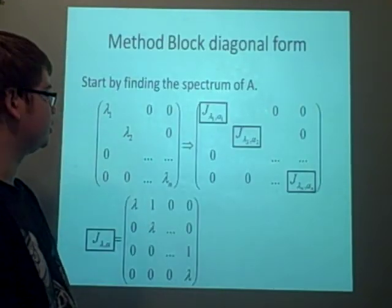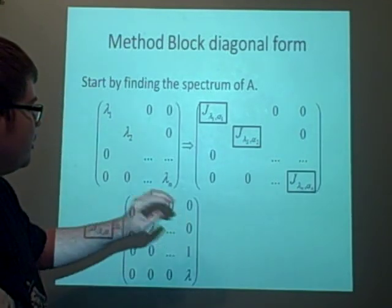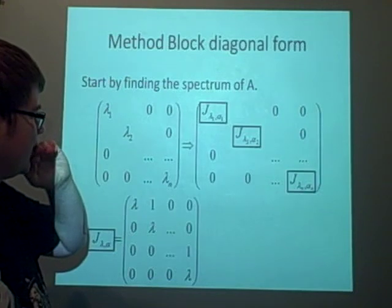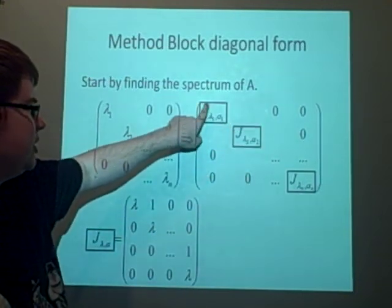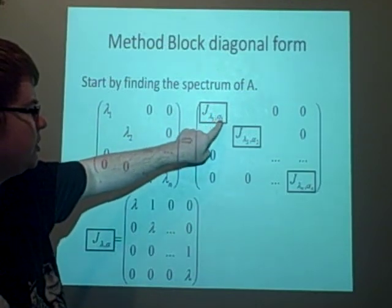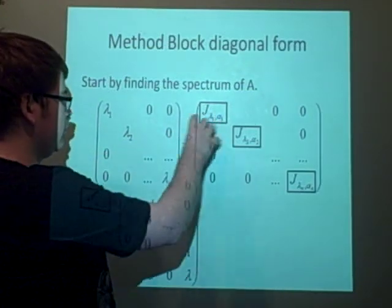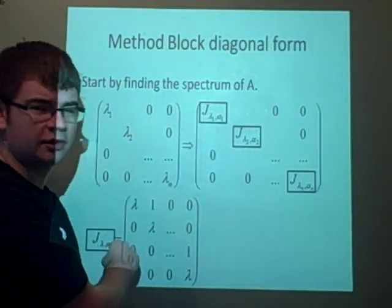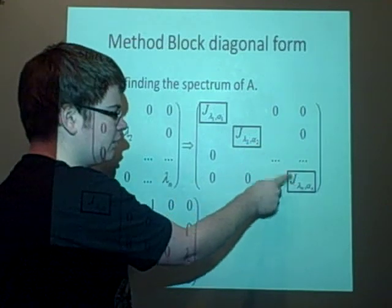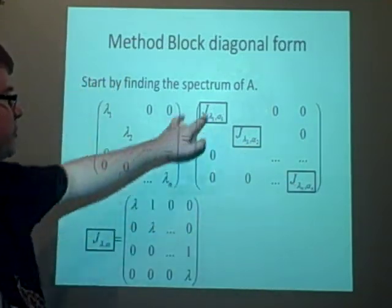Now to start off with, you've got to look at the block diagonal form, and this is where a matrix, your final matrix, this is the Jordan Normal form, is given in each of these blocks. So if we think of each of these blocks as a matrix with a lot of different eigenvalues, each of these blocks has one eigenvalue, so we've got as many Jordan Normal blocks as we need for the number of eigenvalues, which is the spectrum.